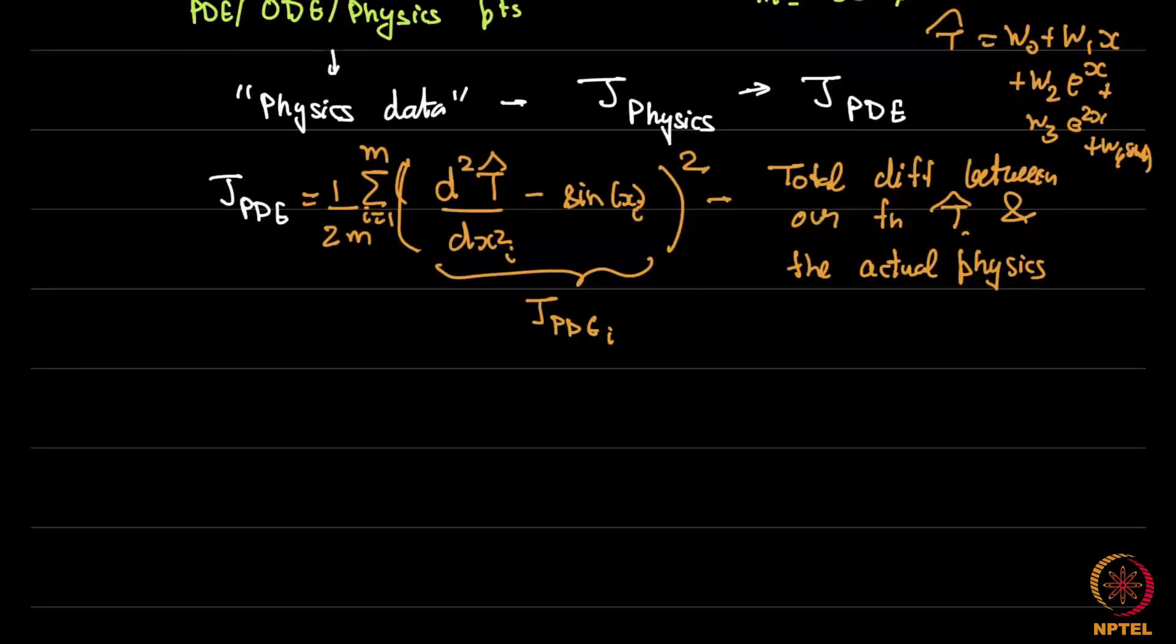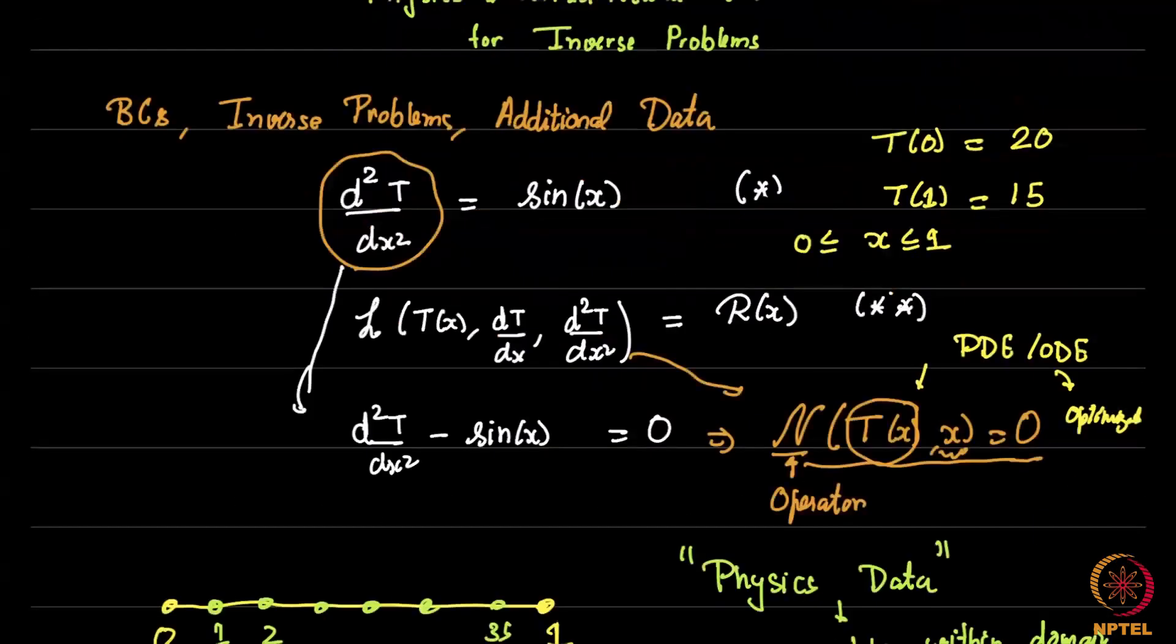So once we do that we actually have our hypothesis function and we have our J_PDE individually. Now of course instead of T̂ being this T̂ could also be a neural network. So it could be a neural network and that could also give some hypothesis function which depends on w. So it really does not matter what we use here. This is all fine but there is no way that any T we choose like that will satisfy these two conditions.